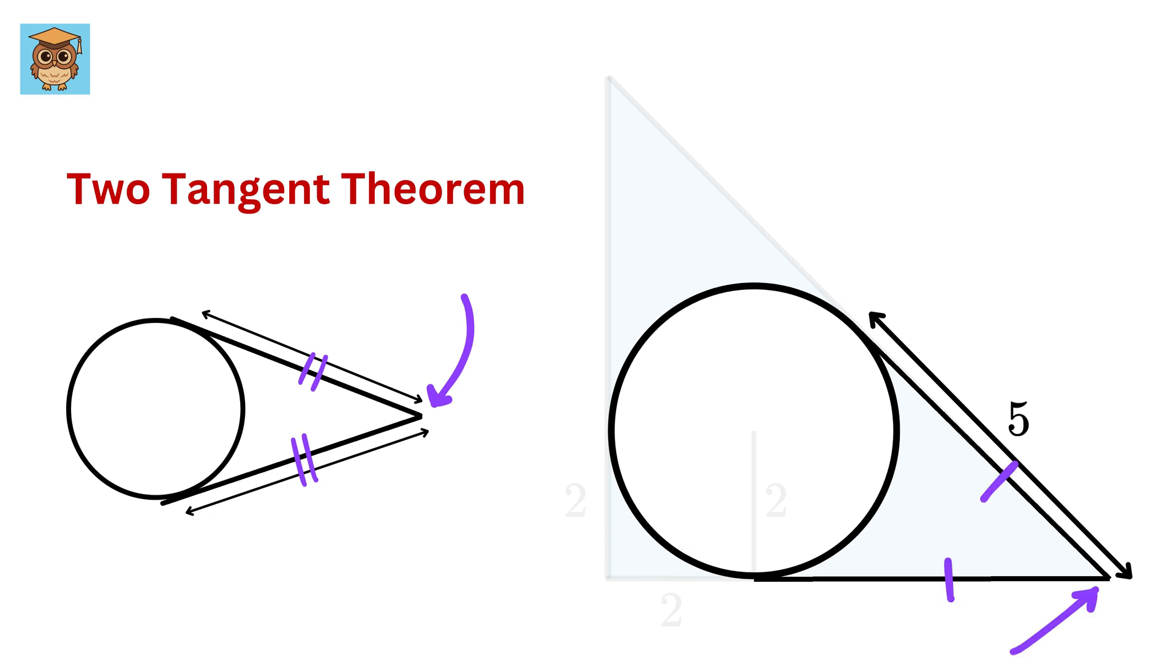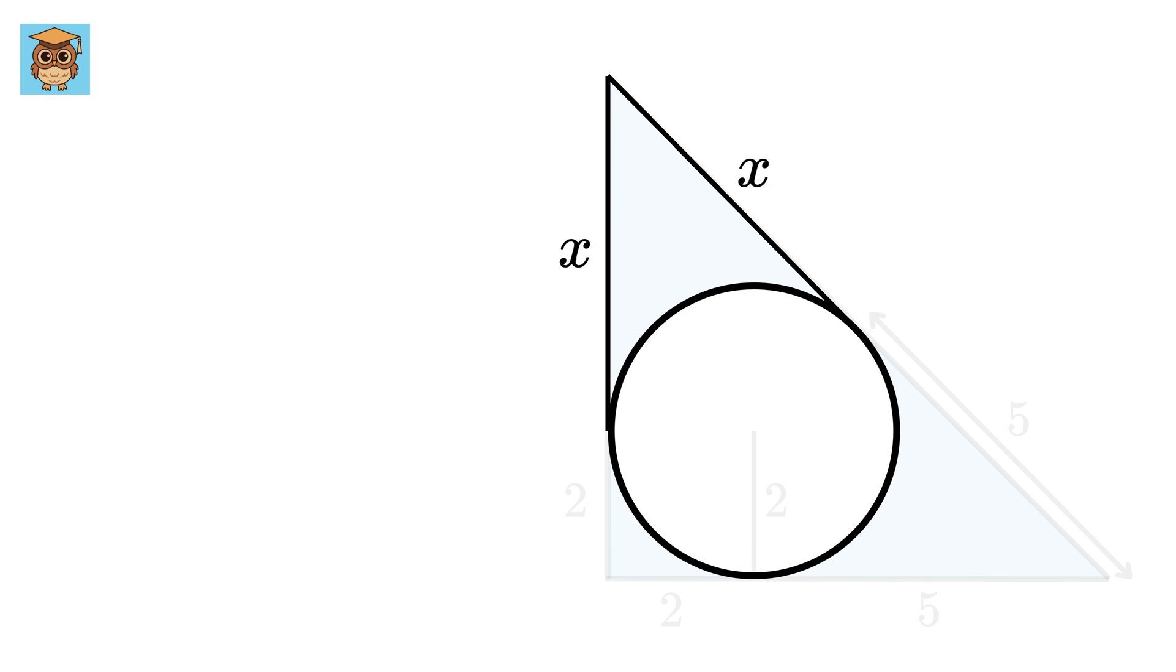So both of them will be equal. Therefore, this will also become 5. Same goes for these tangents. Both of them will be equal. Let us label them as x. Excellent!